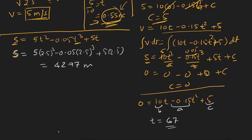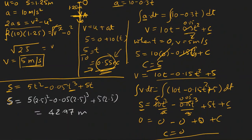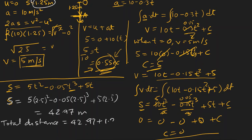The question asks for the total distance P has fallen three seconds after being released from O. It already traveled 1.25 meters from O to A, so total distance is 42.97 plus 1.25, which is about 44.22 meters. It is not always necessary to find turning points, but in some questions there are turning points and because of that we need to add different distances separately.